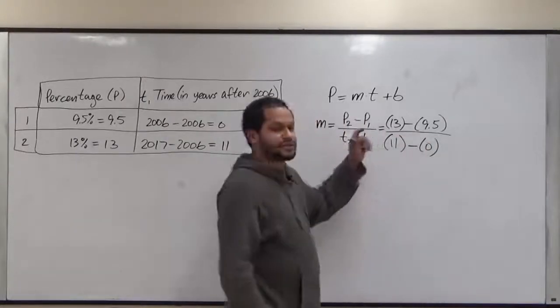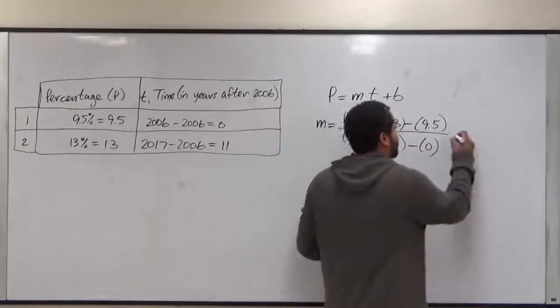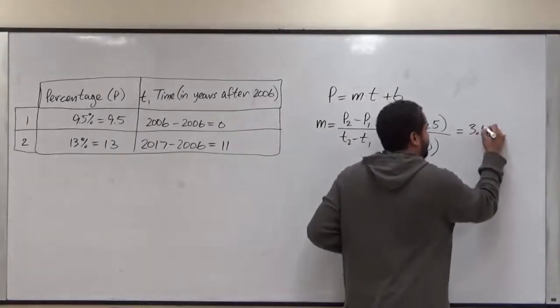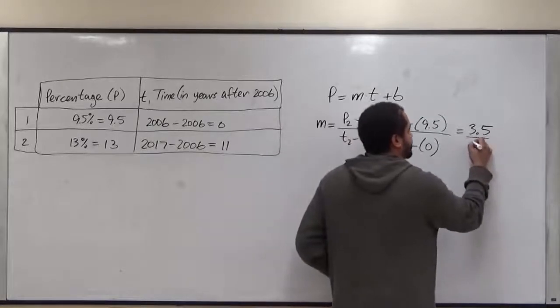Now we're going to take the difference of these two. We have the difference of 13 and 9.5 is 3.5, and our difference between 11 and zero is just 11.